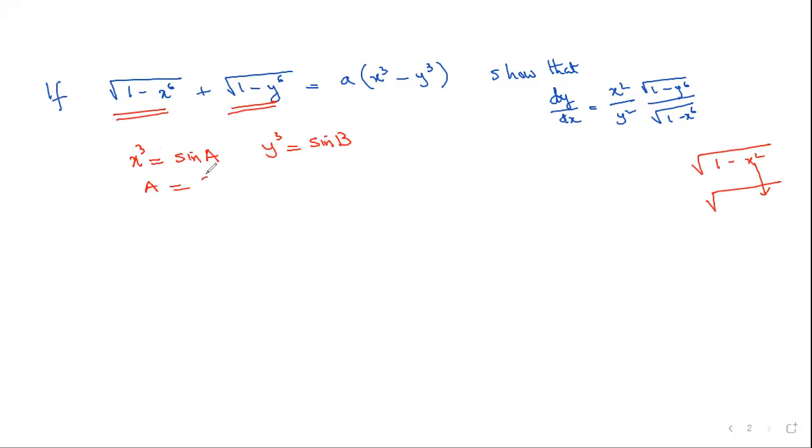What will happen? a can be removed as sin⁻¹(x³) later on, b can be removed as sin⁻¹(y³). So what this will become: √(1 - sin²a) + √(1 - sin²b) = a·(sin a - sin b). This became cos a + cos b = a·(sin a - sin b).